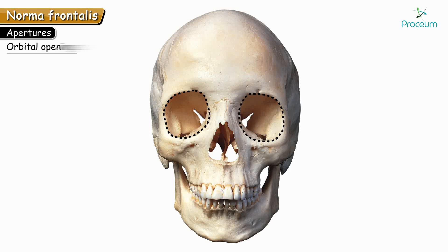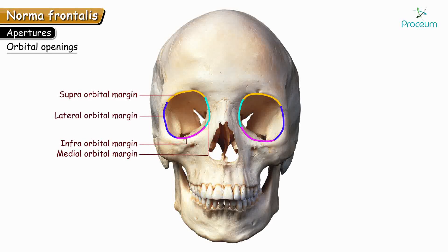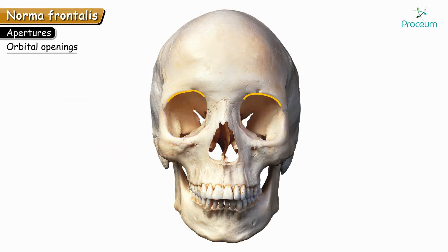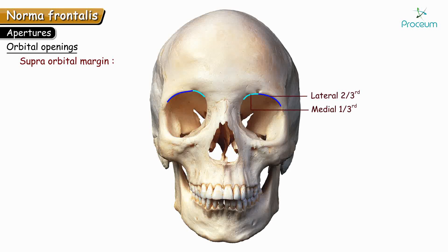Let's begin with the boundaries of the orbit. If you trace the outline of the orbit, it is quadrangular, having an upper boundary called the supra-orbital margin, a lower boundary called the infra-orbital margin, and similarly a medial orbital margin and a lateral orbital margin. The supra-orbital margin is formed by the frontal bone, and at the junction of the medial one-third and lateral two-thirds there is a notch called the supra-orbital notch. In some individuals it may be a separate foramen called the supra-orbital foramen.